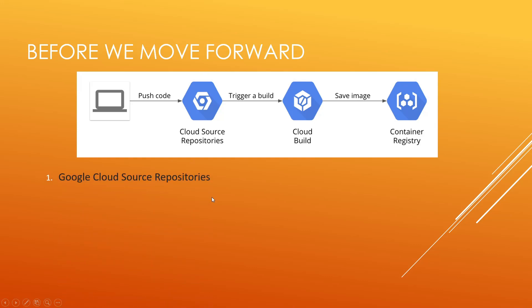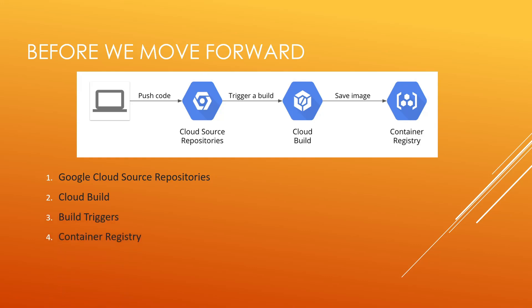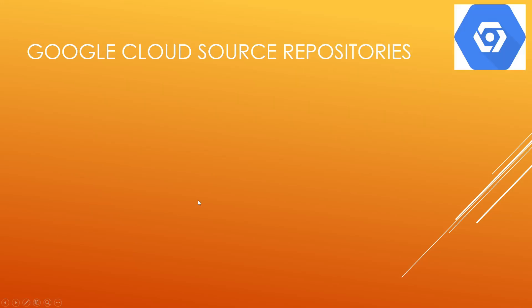The first thing would be Google Cloud Source Repositories. The second thing would be Cloud Build. The third thing would be Build Triggers. The fourth thing would be Container Registry. And we will talk about a very basic project creation. So let's dive right into it.